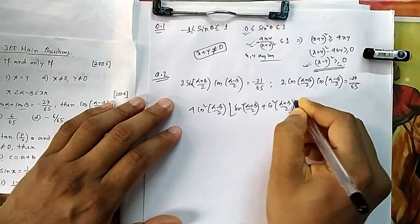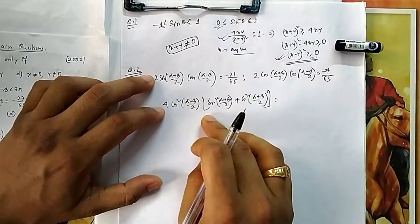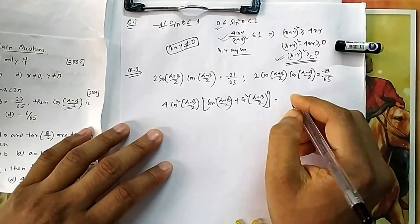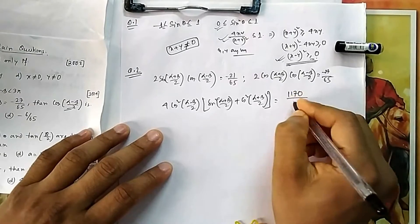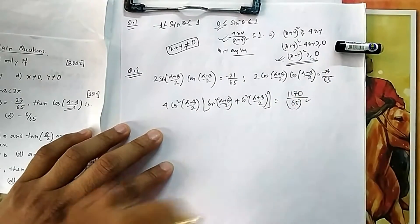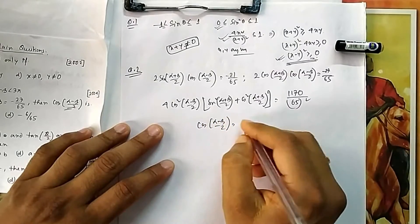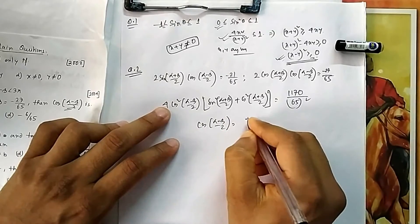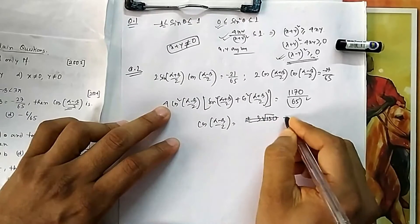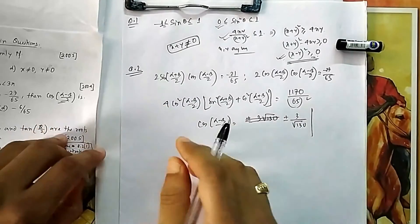After squaring and adding: 4cos²((α-β)/2) · 1 = (21/65)² + (27/65)² = (21² + 27²)/65² = 1170/65². From this, cos²((α-β)/2) = 1170/(4·65²), and taking the square root gives cos((α-β)/2) = ±3/√130.